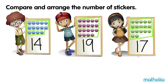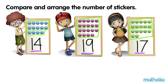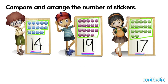Let's arrange the number of stickers from the smallest to the greatest. 14 is smaller than 19 and smaller than 17, so 14 is the smallest number. 19 is greater than 17 and greater than 14, so 19 is the greatest number.